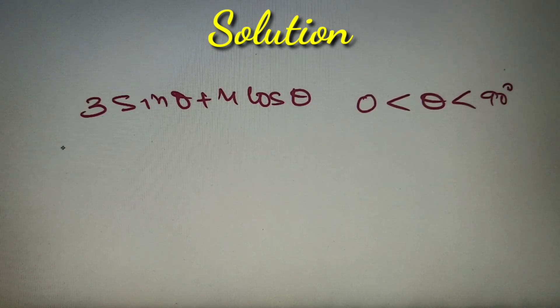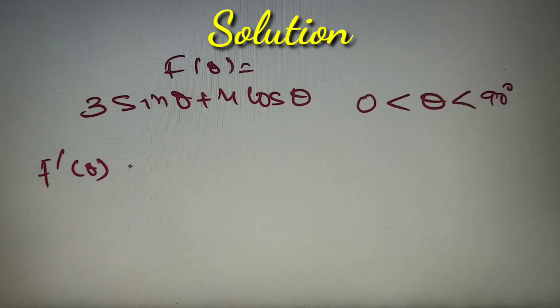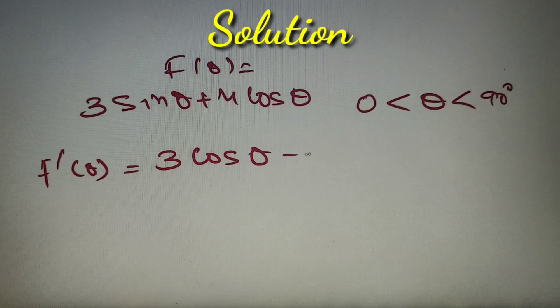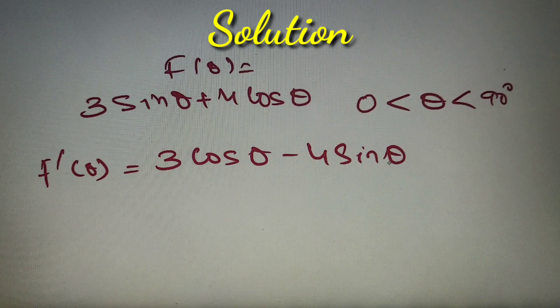So we have got the method and now let's apply it. Let's take f of theta equals 3 sin theta plus 4 cos theta. So f dash theta, the differentiation of f of theta with respect to theta, is equal to 3 cos theta minus 4 sin theta, because differentiation of sin theta is cos theta and differentiation of cos theta is minus sin theta.